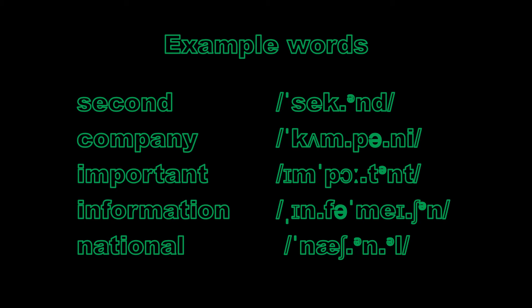You'll see that sometimes the schwa is written in large script and sometimes with a smaller letter — the smaller letter indicates it's slightly less pronounced than when written with a larger letter. You'll also find that this sound occurs as part of the double vowels, or diphthongs, which we'll look at in other videos, so we won't worry about that for today.